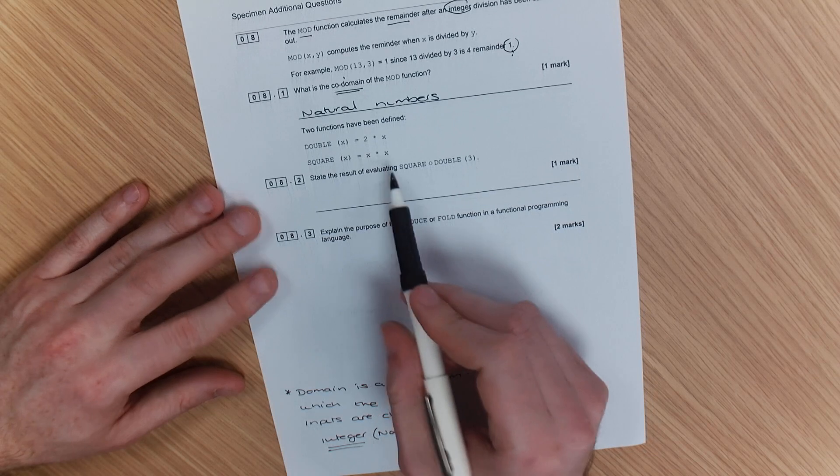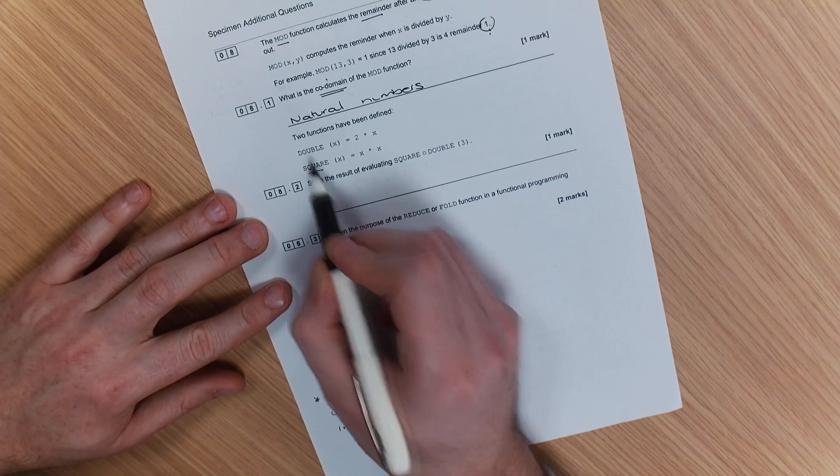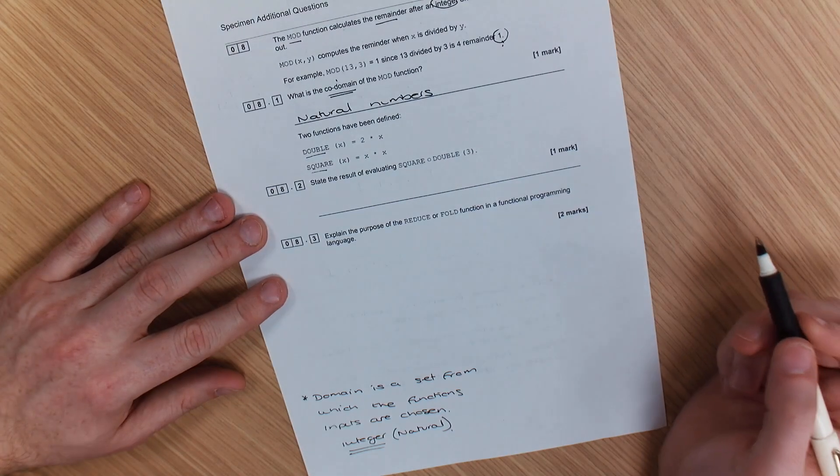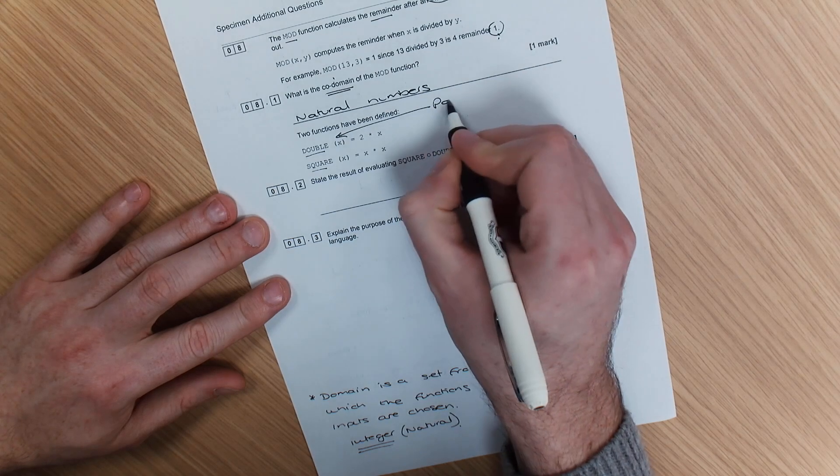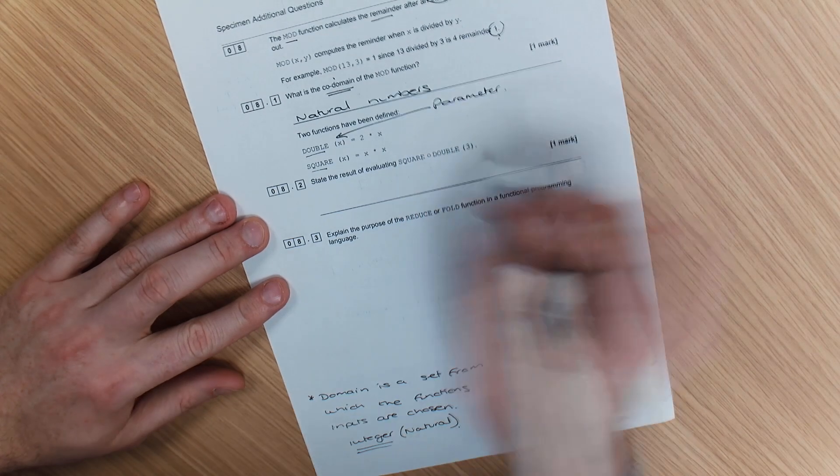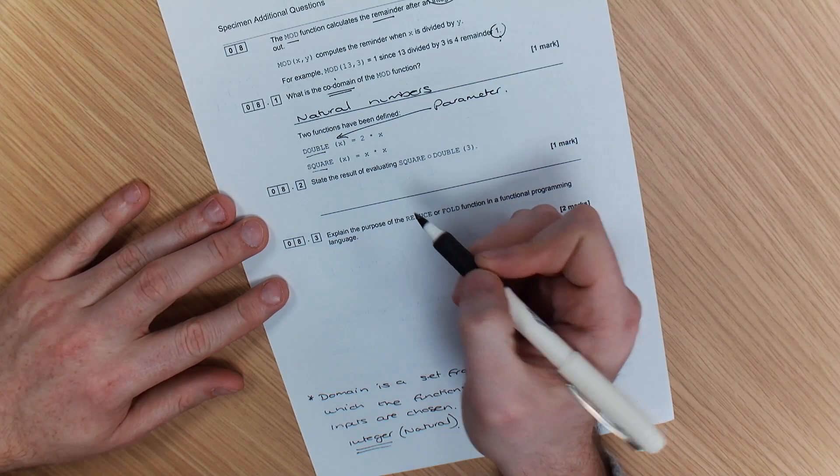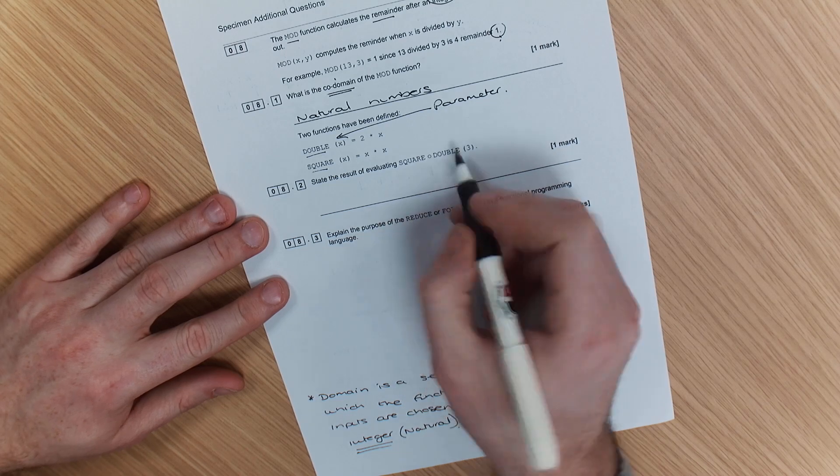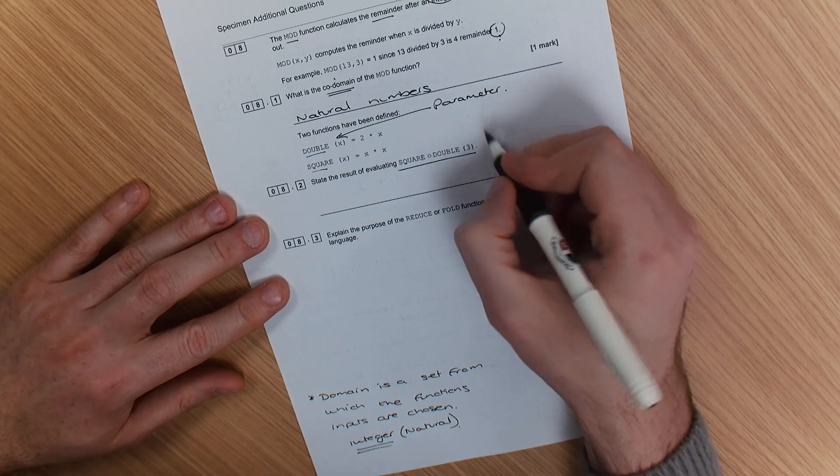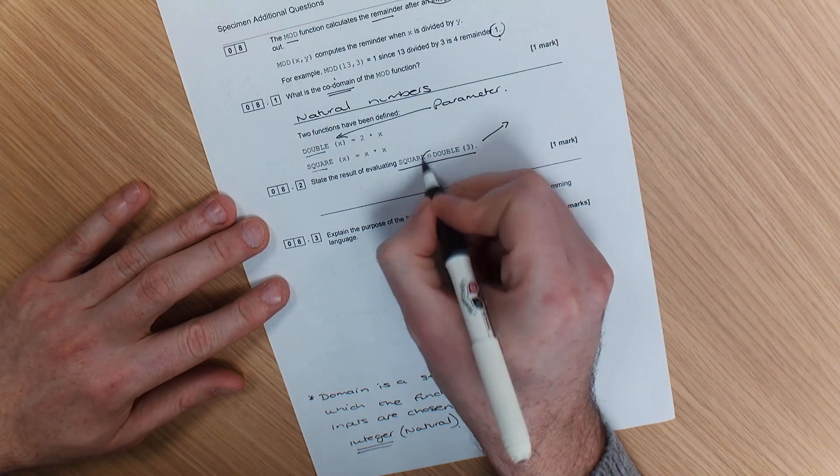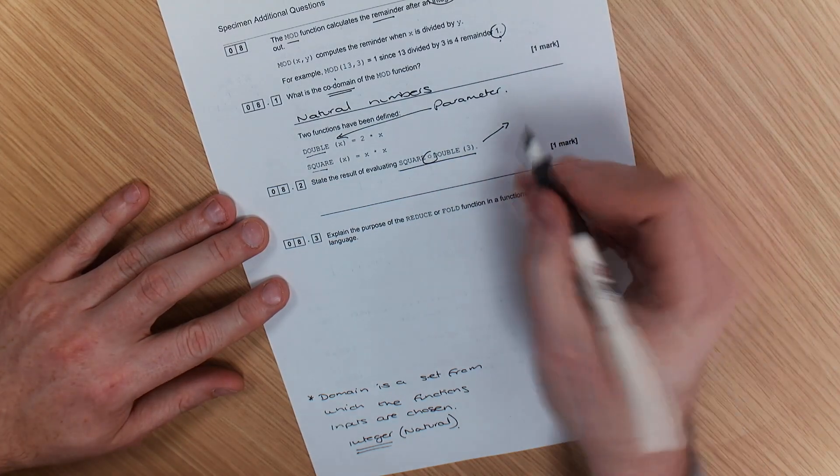So we're now going to move on to have a look at this here. Now, what I've got here is double and square. There are two more functions that have been defined as shown. X is the parameter. And then we've got two times X for double and X times X for squaring it. Now, this is combining these functions together. But just so you know what they would look like, because some of you may think that that little circle there is a mistype. No, it's not. It's what we use to combine our functions.